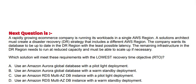Option A: Use an Amazon Aurora global database with a pilot light deployment. Option B: Use an Amazon Aurora global database with a warm standby deployment. Option C: Use an Amazon RDS Multi-AZ instance with a pilot light deployment. Option D: Use an Amazon RDS Multi-AZ instance with a warm standby deployment.